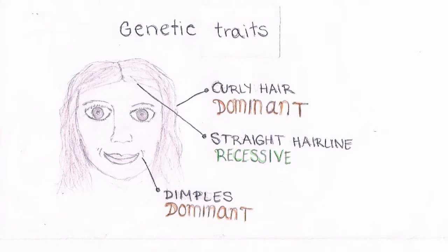Genetic traits, distinguished in our physical appearances, come from the genes each person gets from their own parents.